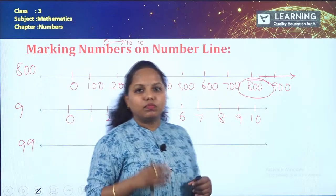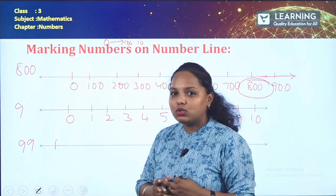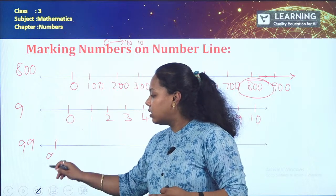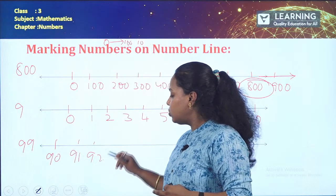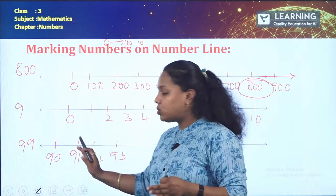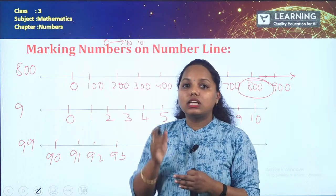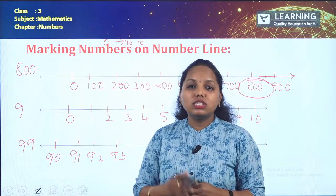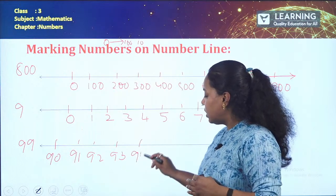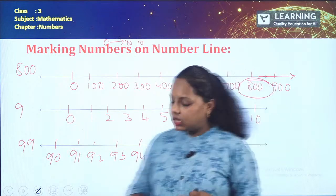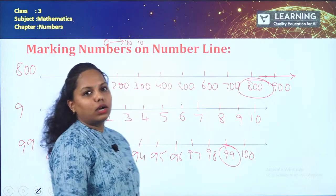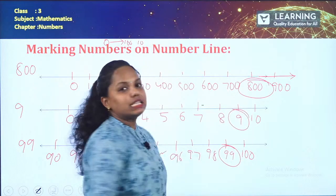To plot 99 on a number line: since the number is 99, you can start from around 90 — for example, 90, 91, 92, 93, 94, 95, 96, 97, 98, 99, 100. Starting from 0 would make 0 to 90 ninety intervals and 90 to 99 only nine — that is not equidistant. So start near your target number for correct equal spacing.